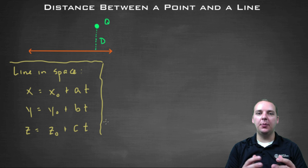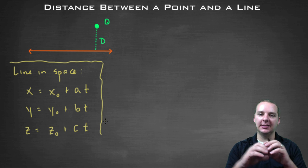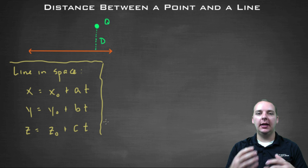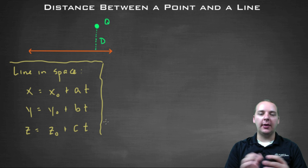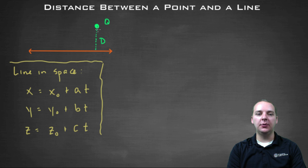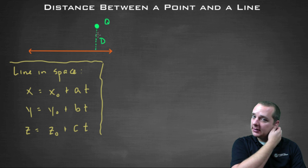Let's say we were given a set of parametric equations that represents a line in space. And let's say we were also given some random point in space. And the question was, what's the shortest distance from your point, let's call it Q,